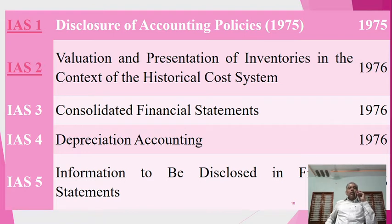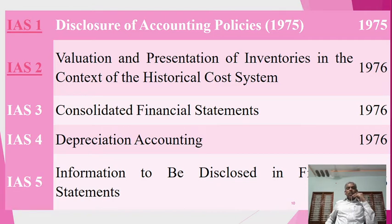IAS 1 is on disclosure of accounting policies, established in 1975. It frames standards and guidance related to accounting policies. IAS 2 is on valuation and presentation of inventories in the context of the historical cost system, developed in 1976.